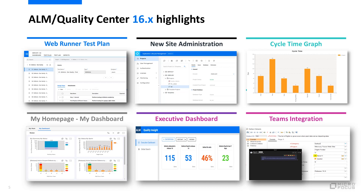We have added the My Dashboard tab to the My Homepage module to highlight your most relevant graphs. The Quality Insight utility incorporates global search and provides the new executive dashboard that lets you create and manage KPI cards to measure how your team organization progresses towards goals. And with the new Teams integration, you can communicate with others by sharing information on a specific entity.